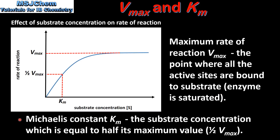The Michaelis constant Km is the substrate concentration which is equal to half its maximum value.